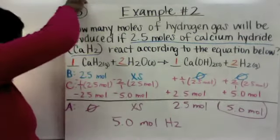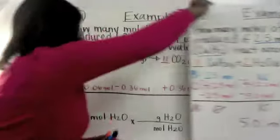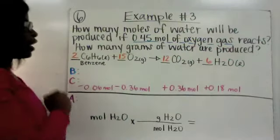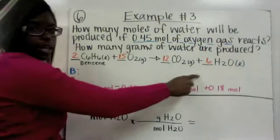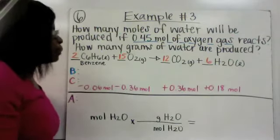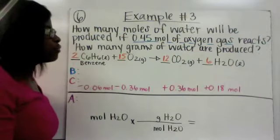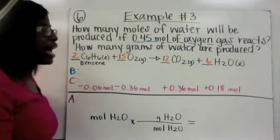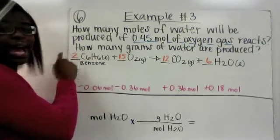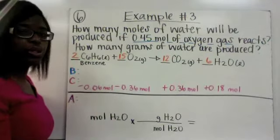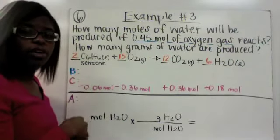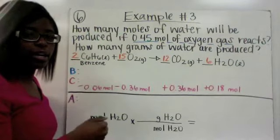Now we're going to our last example. You don't have to write down the word equation, but make sure you write down your balanced equation. How many moles of water will be produced if 0.45 moles of oxygen gas reacts? In addition to that, how many grams of water are produced? So you're going to have to do step 5, where you have to convert your answer from moles to grams.